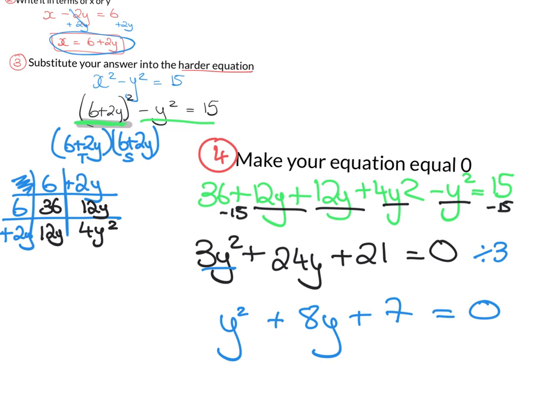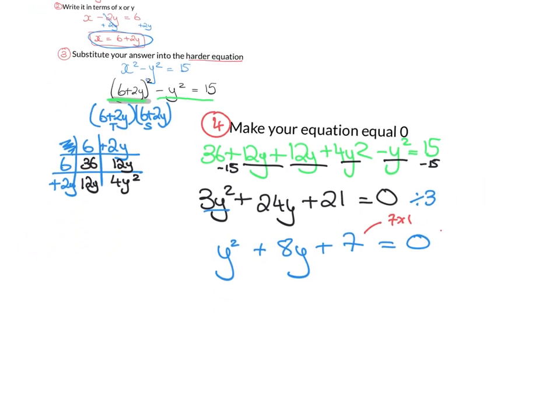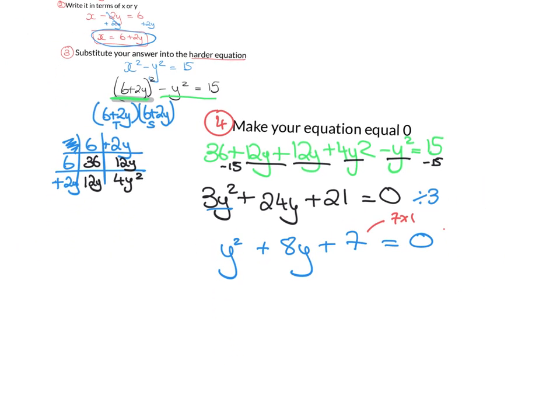And now you can see here we have a quadratic. So quadratic, we are going to look at the factors of 7. There's only one, as it's a prime number. And those factors, what way can I get 8y out of them? Well, I can have y's back to back, and I can have a plus 7 and a plus 1.